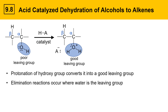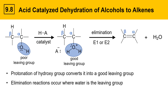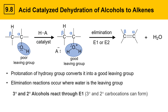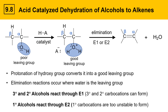The elimination reaction can occur either by E1 or E2 to produce an alkene with a carbon-carbon double bond between the alpha and beta positions, and water as a co-product — hence the name dehydration; water is being pulled out of the molecule. Tertiary and secondary alcohols react through the E1 mechanism because tertiary and secondary carbocations are stable enough to form. However, primary alcohols react through E2 reactions because primary carbocations are just too unstable to form.